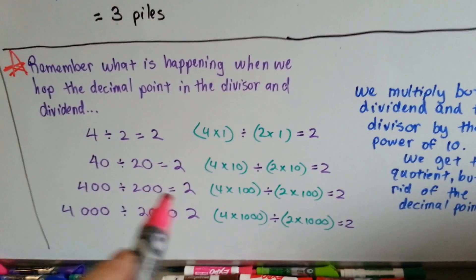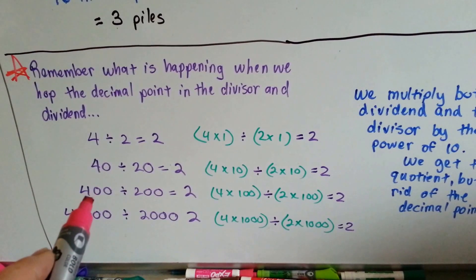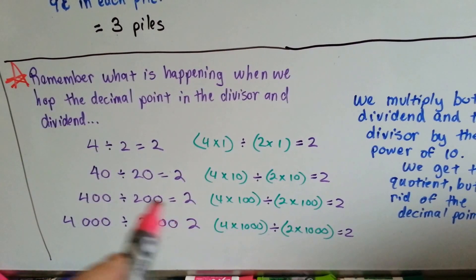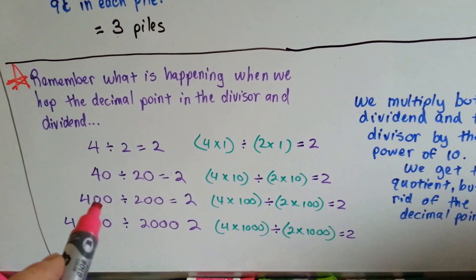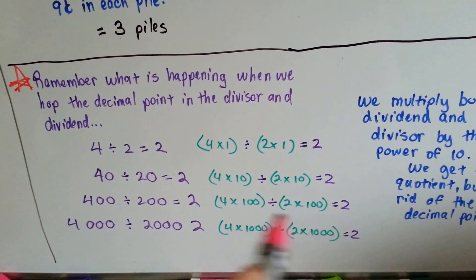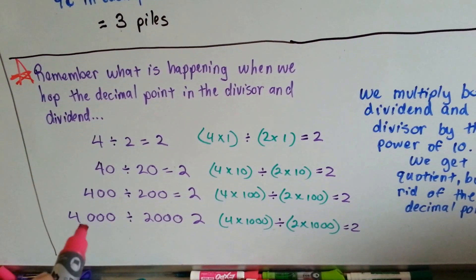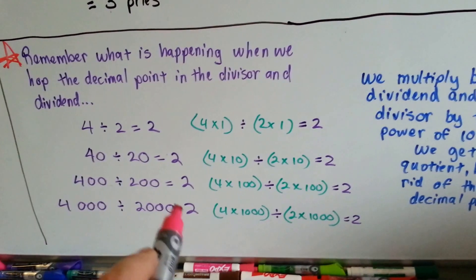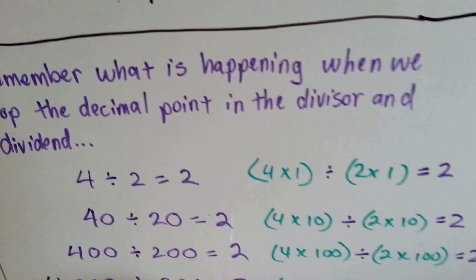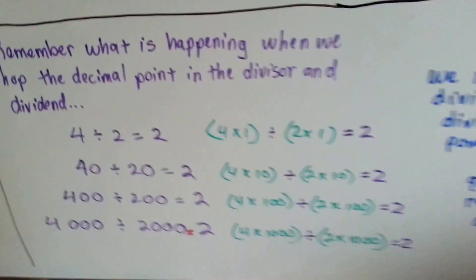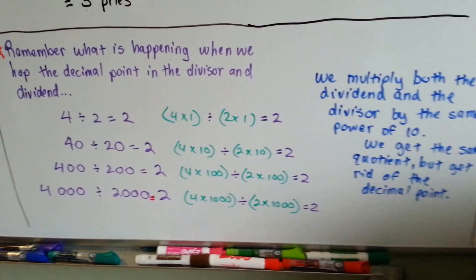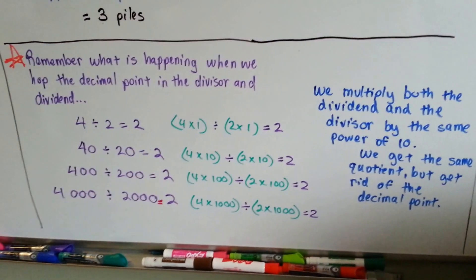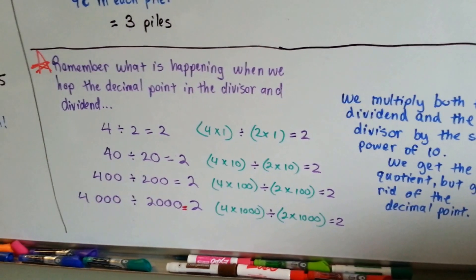And it helps us get rid of the decimal point. If we multiply the divisor and the dividend by 100 as the power of 10, it's still going to have a quotient of 2. If we multiply them each by 1000, we're still going to have a quotient of 2. What's happening is it's getting rid of the decimal point for us. By the same power of 10, we get the same quotient, but we get rid of that sassy decimal point.